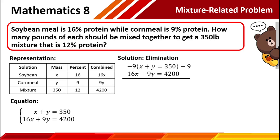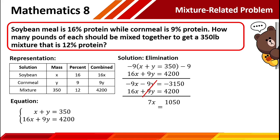Multiply both sides of the first equation by negative 9, so our new equation is negative 9x minus 9y equals negative 3,150. Copy the second equation, and then we can cancel negative 9y and positive 9y because when we add these two, the answer becomes 0. Adding the remaining terms: negative 9x plus 16x gives 7x, and negative 3,150 plus 4,200 gives 1,050. To find the value of x, divide both sides by 7, and the value of x is 150.